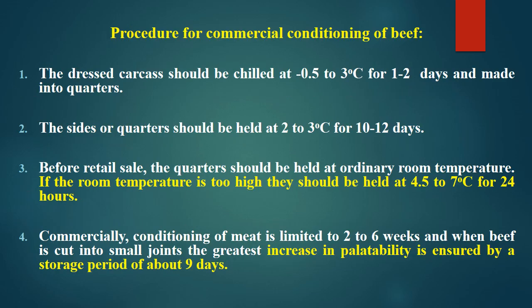Here is the recommended procedure for commercial conditioning of beef. First, the dressed carcass should be chilled at minus 0.5 to 3 degrees Celsius for 1 to 2 days and made into quarters. Second, the sides or quarters should be held at 2 to 3 degrees Celsius for 10 to 12 days. Third, before retail sale, the quarters should be held at ordinary room temperature, or if the temperature is too high, at below 4 to 7 degrees Celsius for 24 hours. Commercially, conditioning of meat is limited to 2 to 6 weeks, and when beef is cut into small joints, the greatest increase in palatability is ensured by a storage period of 9 days.